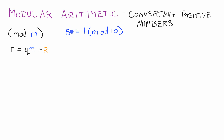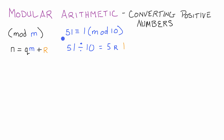So how do we get from 51 to 1? The simple answer, if this is a positive number, is we simply take 51 and divide it by the mod — in this case, that's 10. That gives us the result 5 with a remainder of 1. 10 goes into 51 five times, and then we have 1 left over. When we're dealing with positive numbers, that's really all you need to do. So 51 maps to 1 when we're dealing with mod 10.